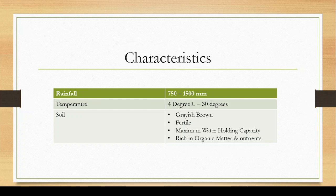The characteristics of the temperate deciduous forest are: rainfall of 750 to 1,500 millimeters, which is average rainfall, and temperature of 4 degrees Celsius to 30 degrees Celsius, considered a moderate temperature. The soil condition is grayish brown in color, very fertile, with maximum water holding capacity, rich in organic matter and nutrients. This means they can produce a large variety and diversity of organisms that can inhabit this ecosystem, as this is the most moderate forest.